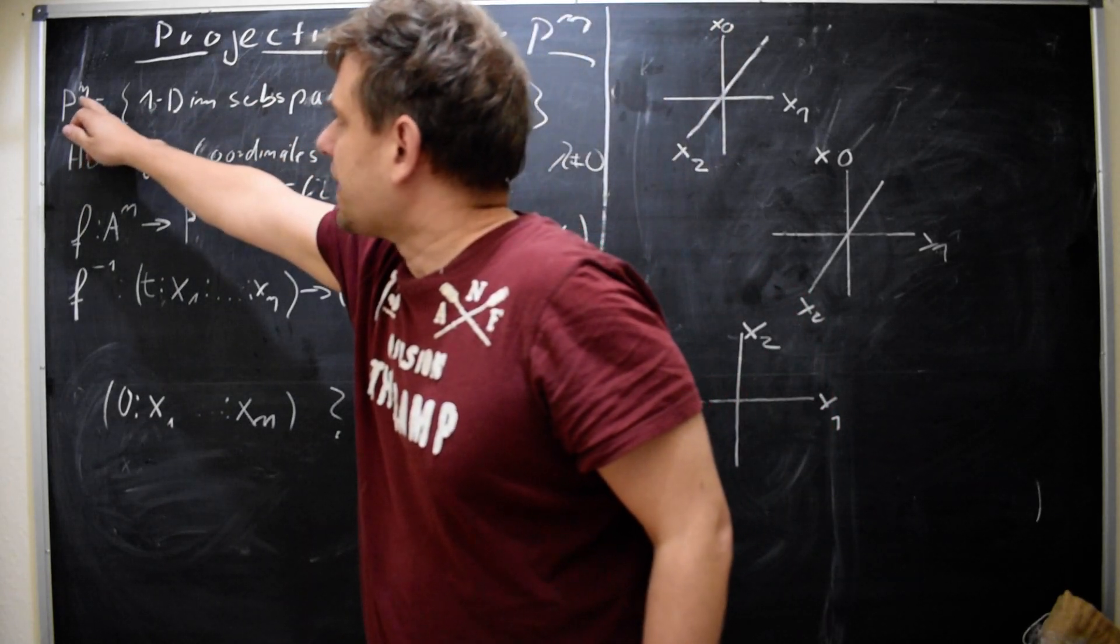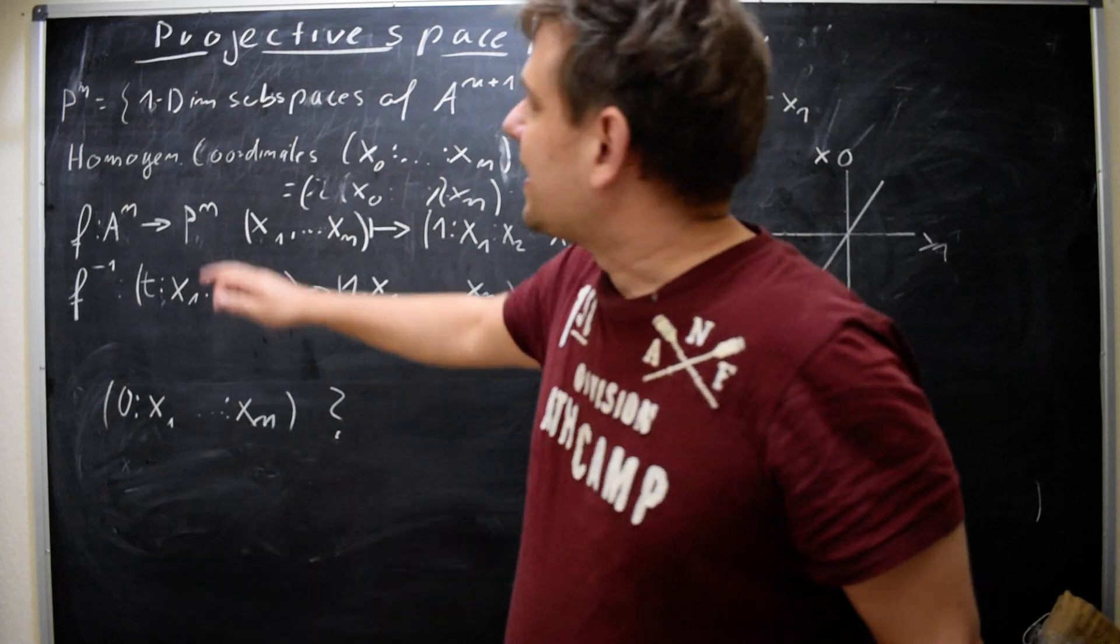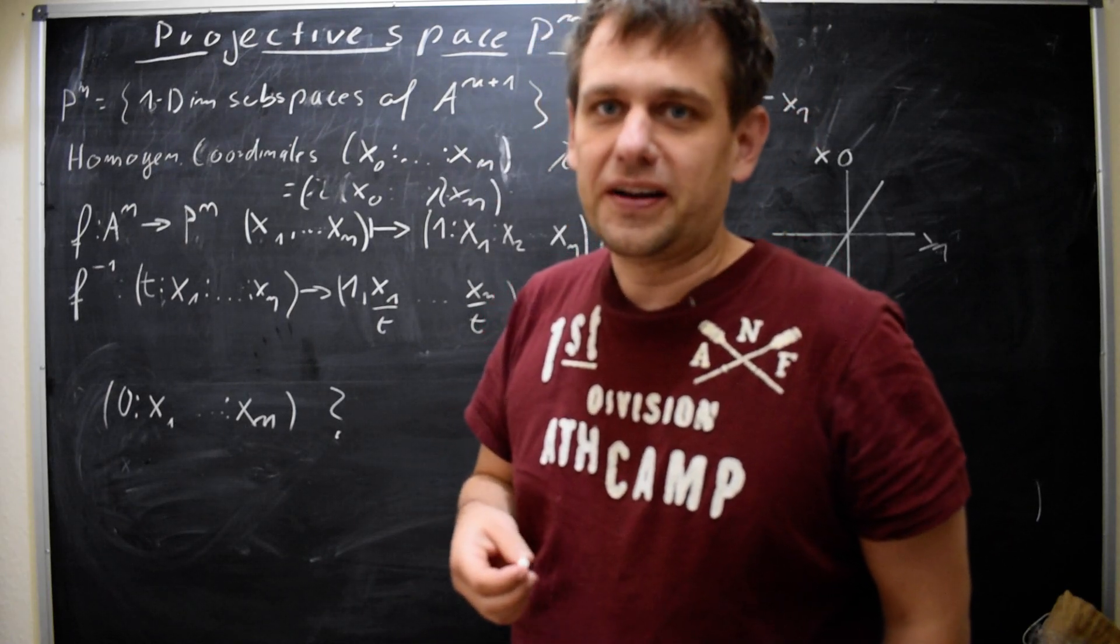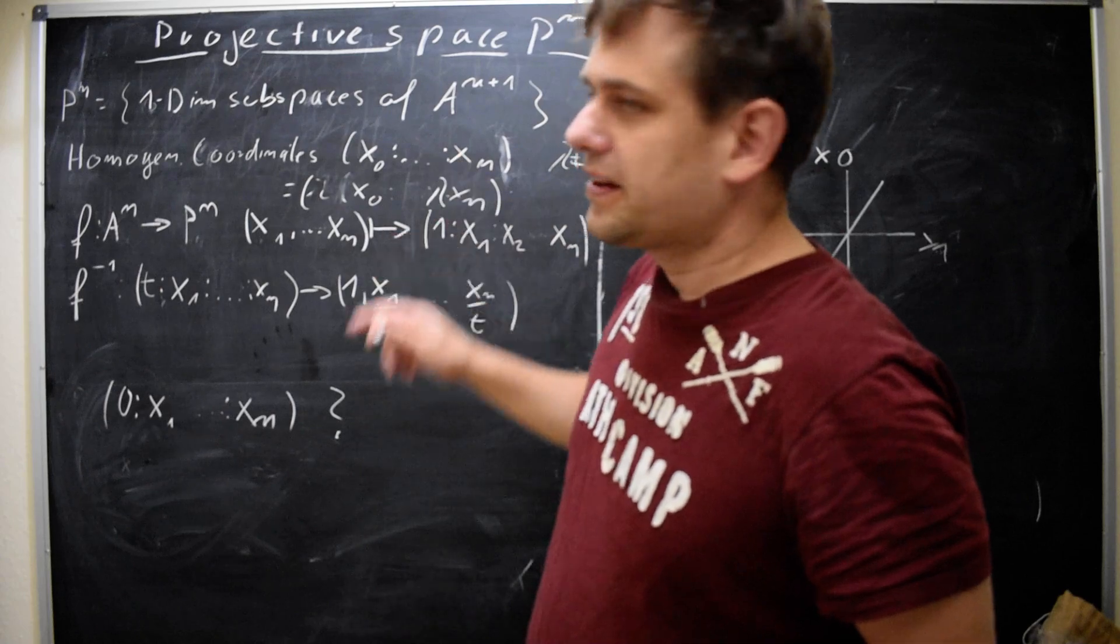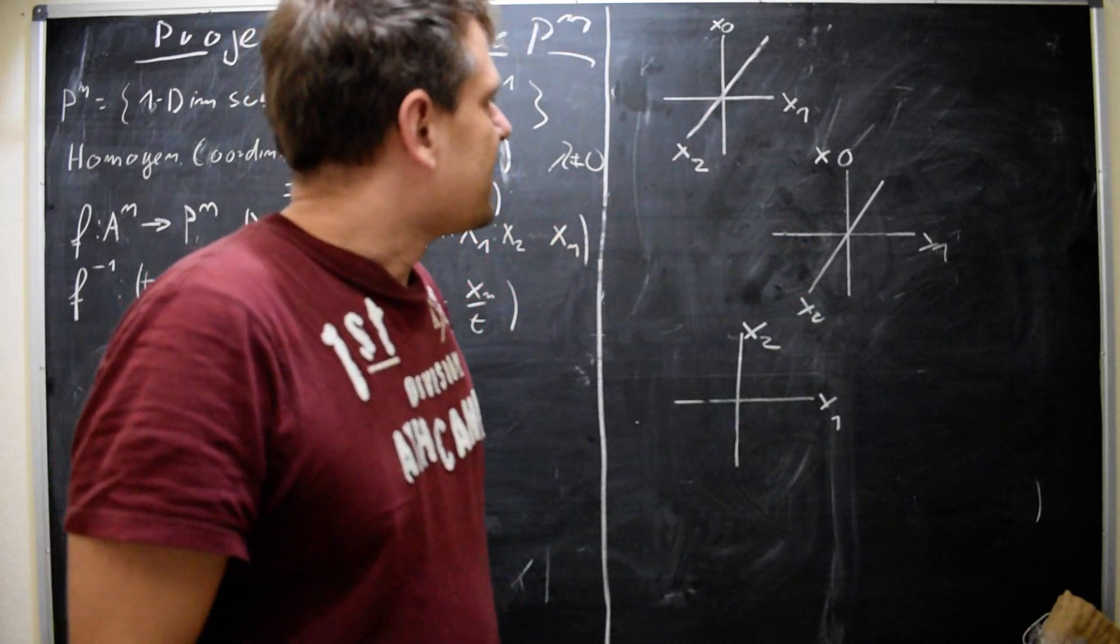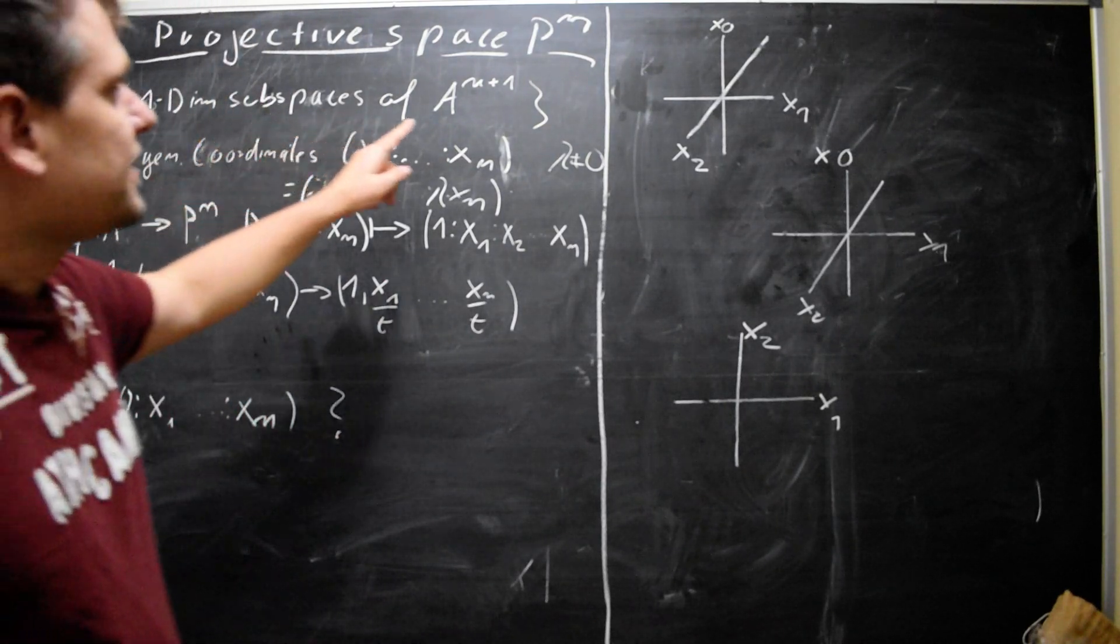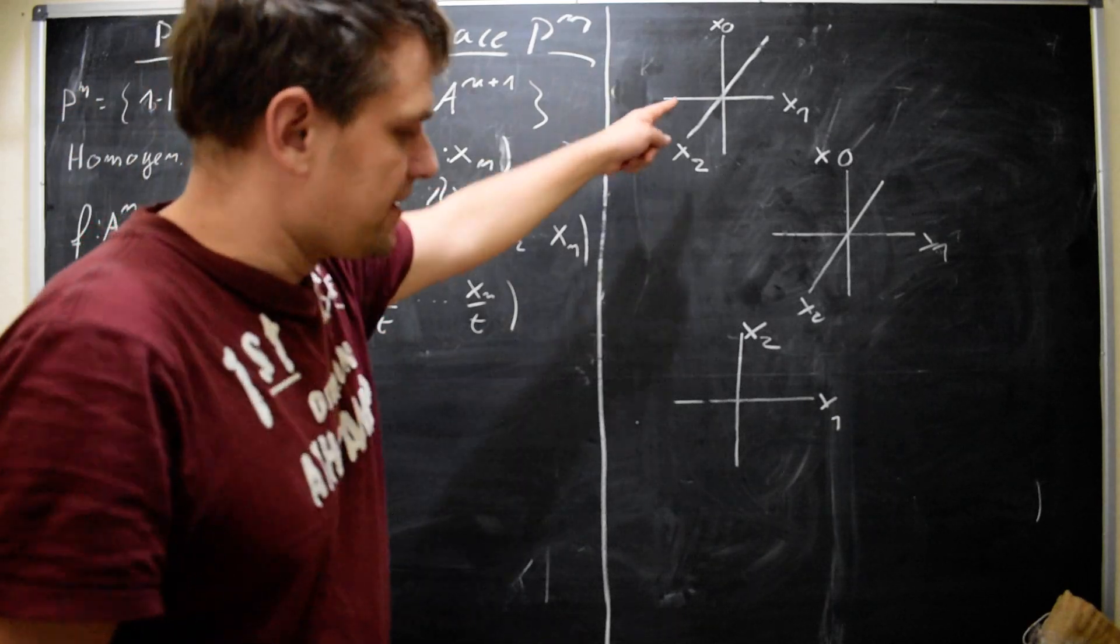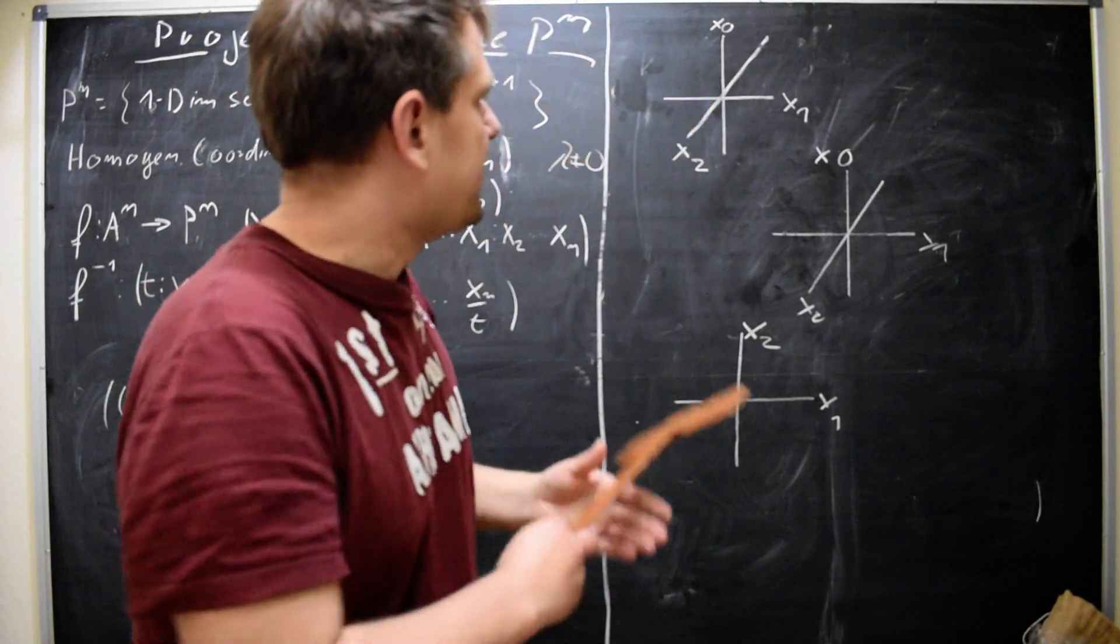So the projective space, the n-dimensional projective space P^n, is the space or the set of one-dimensional subspaces of the affine space A^(n+1). So you might think of R². If n is 2, this would be R². And this is what we have drawn here, two copies of R². So this is A².